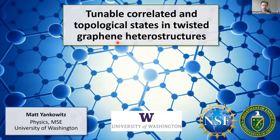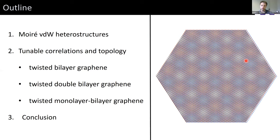This research is a mixture of some of the things I did as I was leaving my postdoc at Columbia and more so some of the things I've been doing in the past year since I started the faculty position here at UW. Here's an outline of the talk: first, a brief introduction to moiré van der Waals heterostructures, then what we've been doing over the past two years looking at various twisted numbers of graphene layers — two, four, or three layers — asking what correlated and topological states we can get and how we can tune and control them.